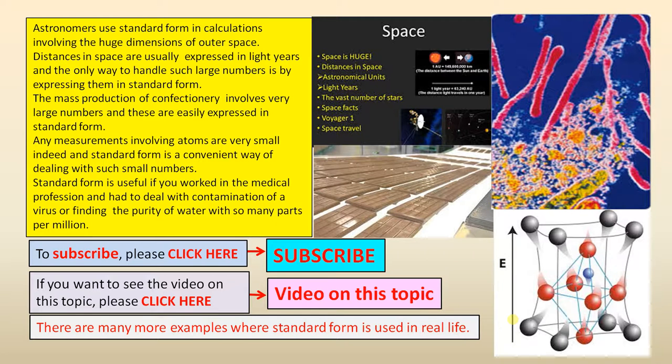Astronomers use standard form in calculations involving the huge dimensions of outer space. Distances in space are usually expressed in light years and the only way to handle such large numbers is by expressing them in standard form. The mass production of confectionery involves very large numbers and these are easily expressed in standard form.